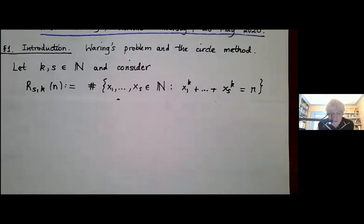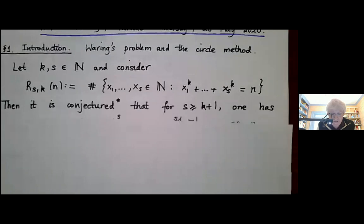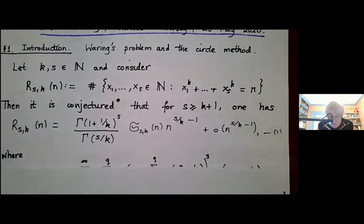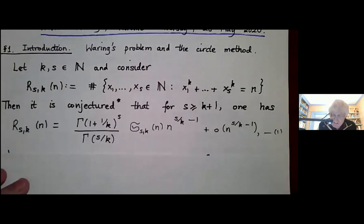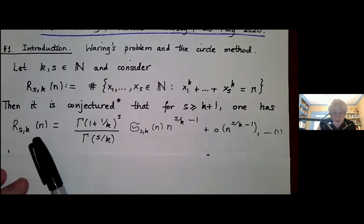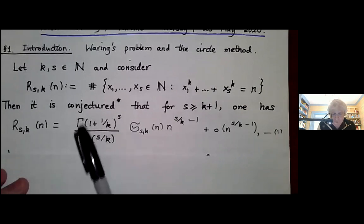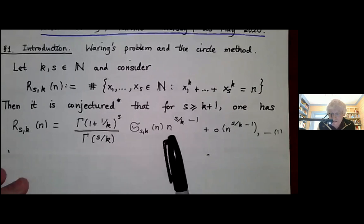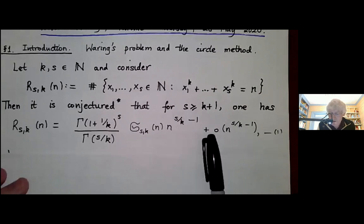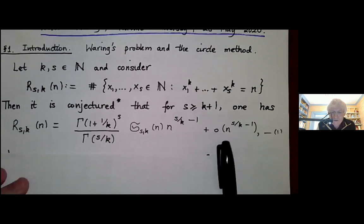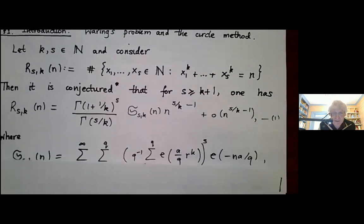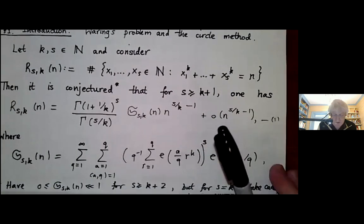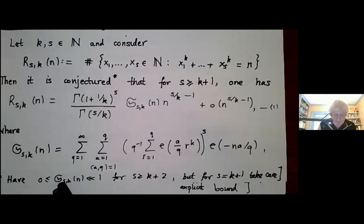For this classical problem, going back to Waring in 1770, we think we know what the answer is to this representation problem. As conjectured — I put an asterisk on this which I'll return to in just a moment — when s is at least as big as k plus 1, the number of representations of n as a sum of s-th powers is a quotient of classical gamma functions times the singular series times n to the s/k minus 1, plus little-o of n to the s/k minus 1. I call this an asymptotic formula; the singular series might be 0 if there are no local solutions.